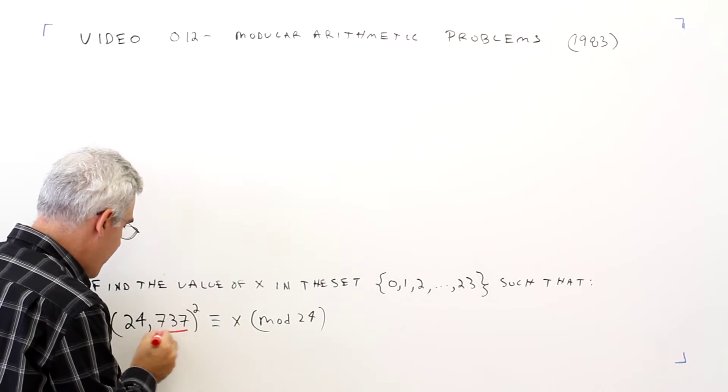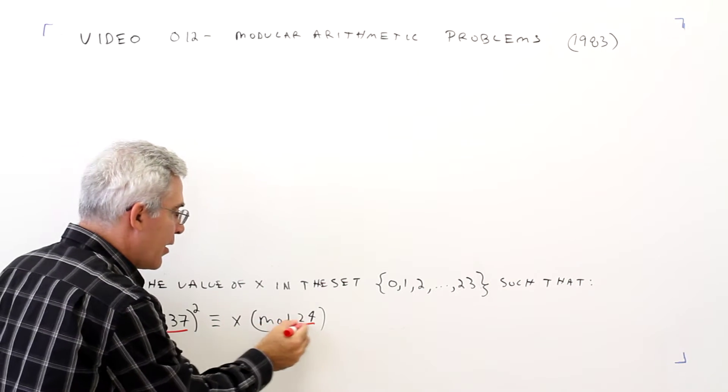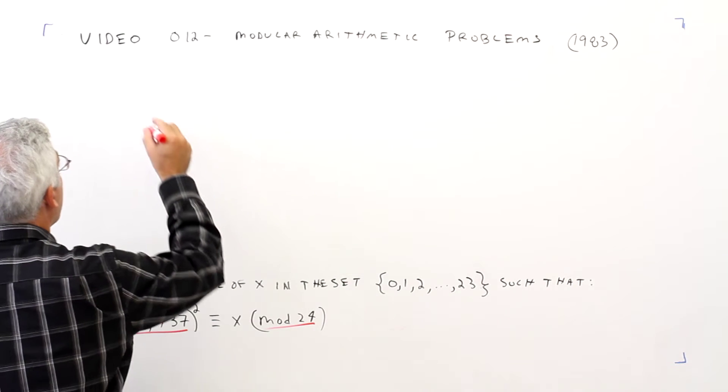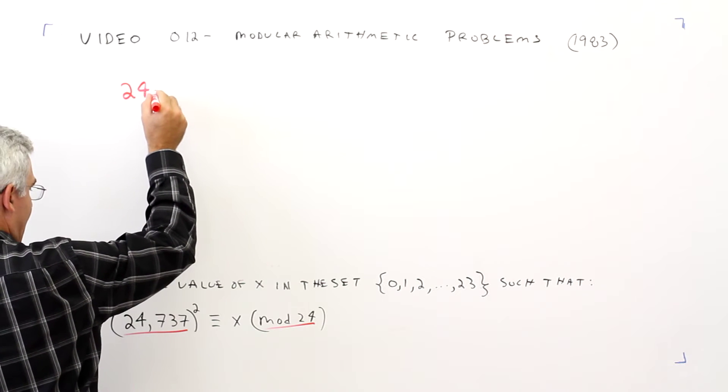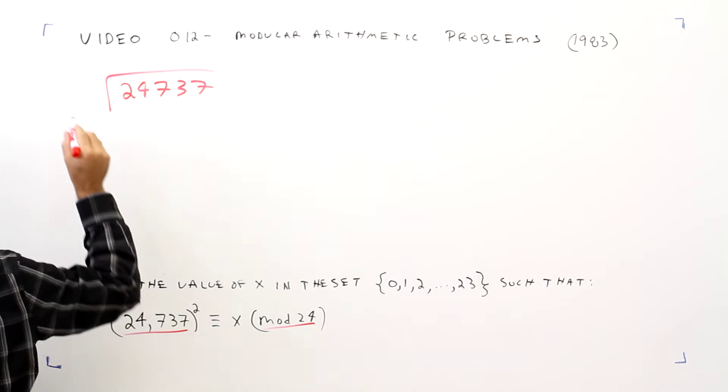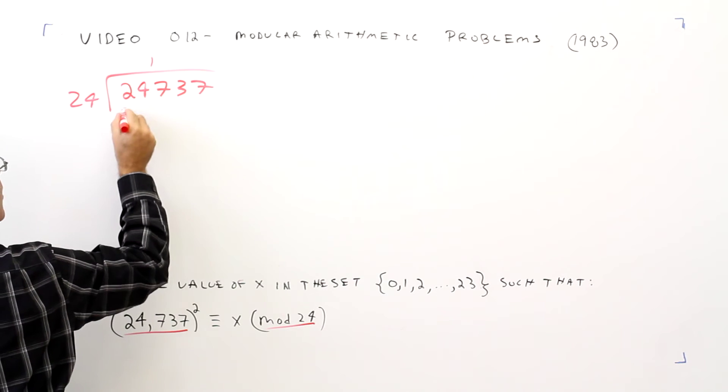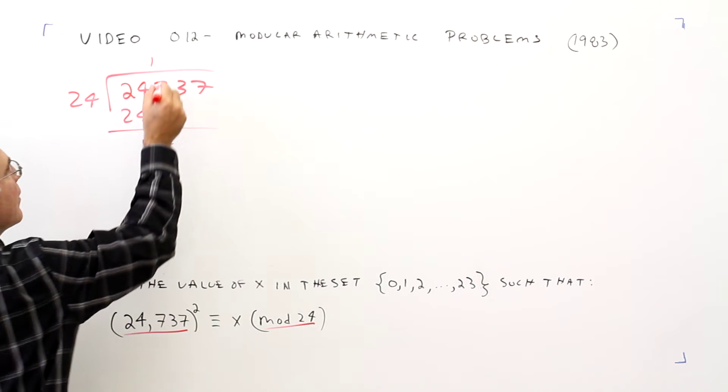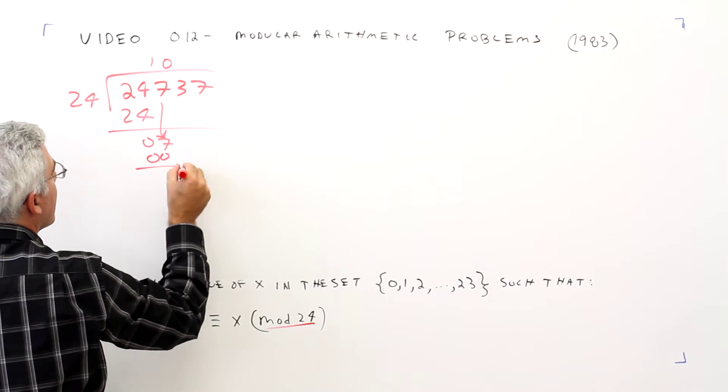All right, we're going to simplify this right away in mod 24. Just divide by 24, find the remainder, work with that. So 24,737 divided by 24, 1, 24, 1, 24, 0, bring down the 7, 0, 0, bring down the 3.